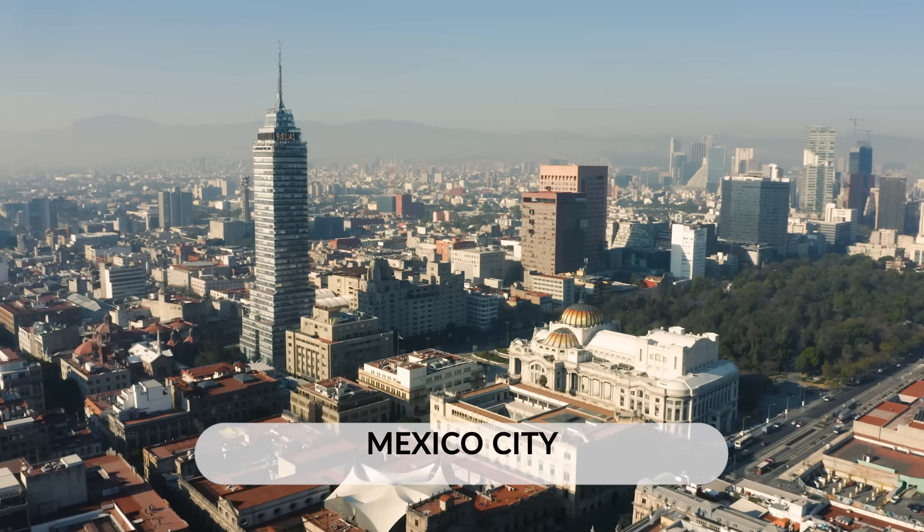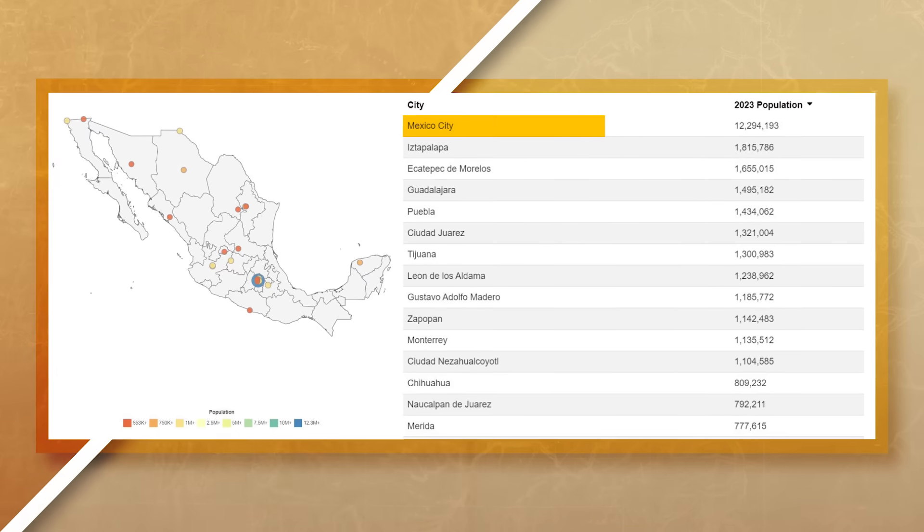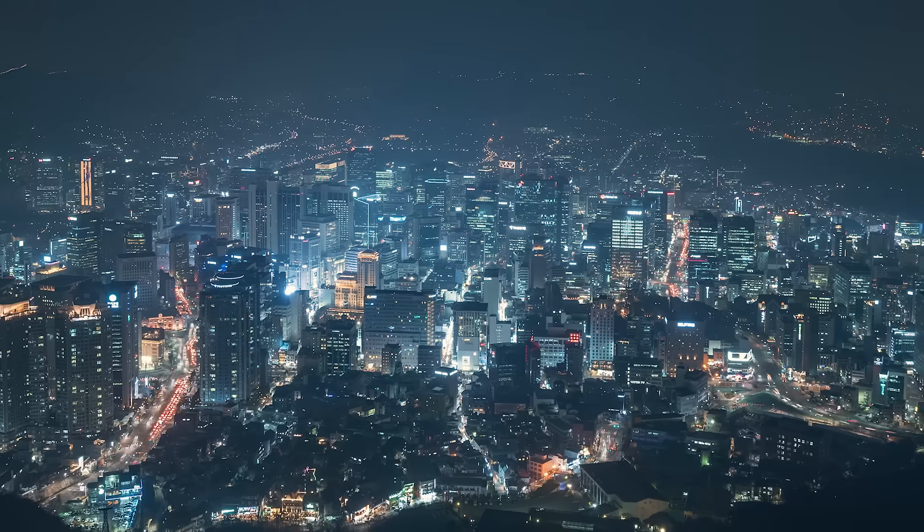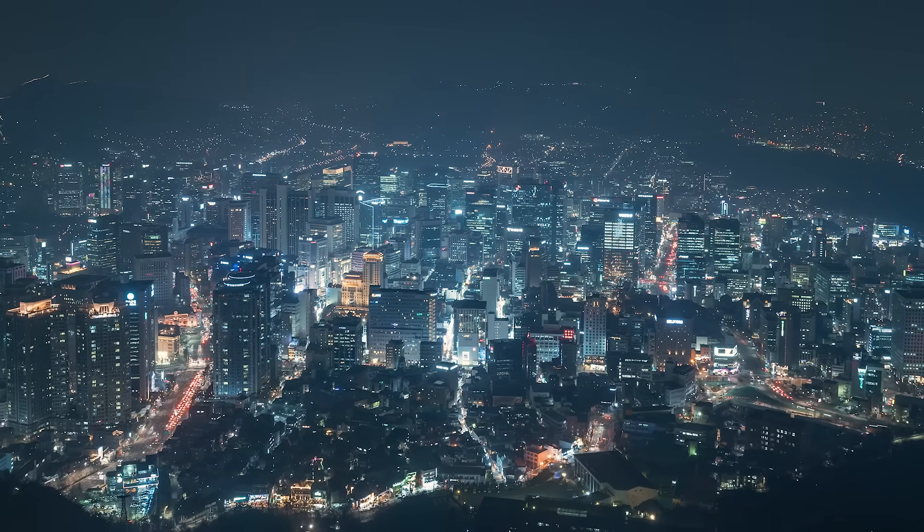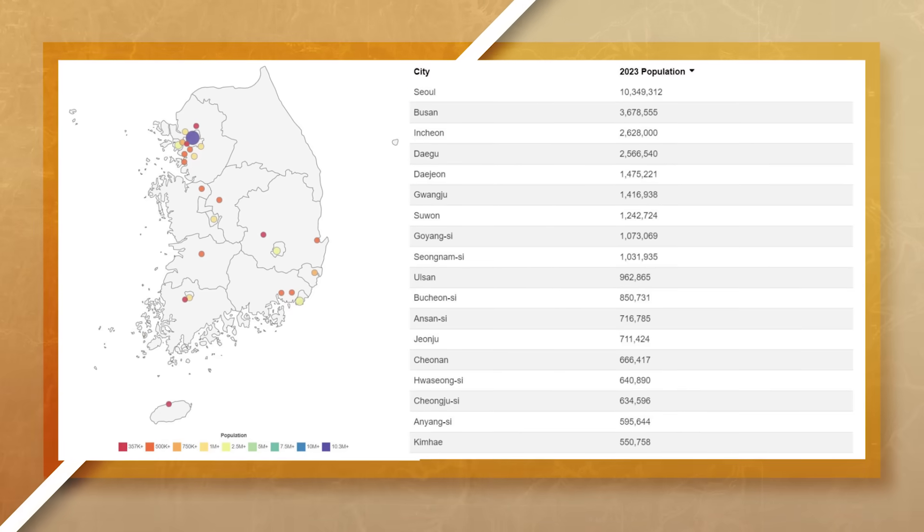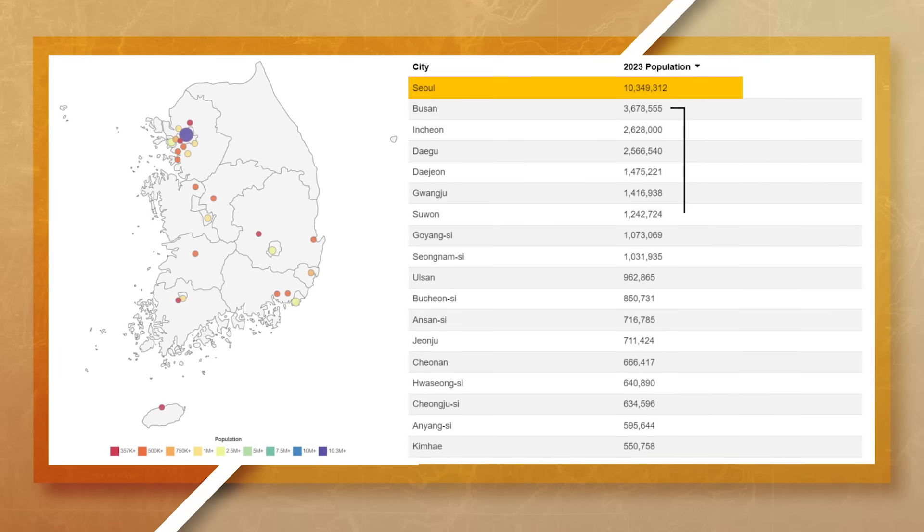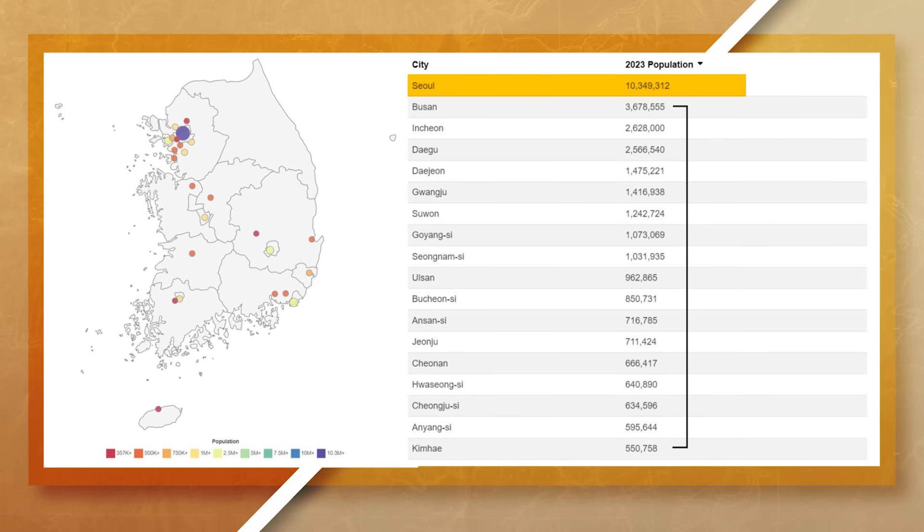Today we can look at Mexico City as an example of a primate city. Notice that the population of Mexico City is significantly larger than the rest of the top cities in Mexico. One other example of a country with a primate city would be South Korea. If we compare the different cities in South Korea we can see that Seoul has a significantly larger population compared to the rest of the cities in the country.